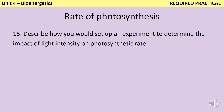The photosynthesis required practical comes up regularly as a six-mark question in which you're asked to write a method. This is quite straightforward, but it's easy to lose out on a lot of marks because you've forgotten something really simple — the classic one is forgetting to mention that you would time the experiment, because if you don't have a time, you can't work out a rate. Firstly, you need to take your aquatic plant and place it in a beaker of water. This will allow you to see the bubbles that are being produced during photosynthesis.